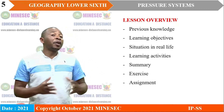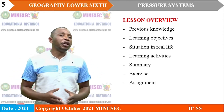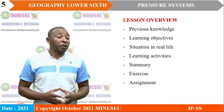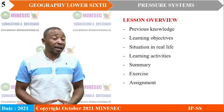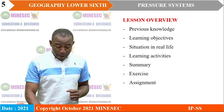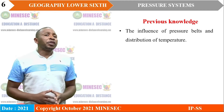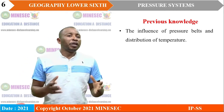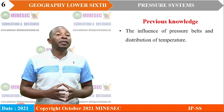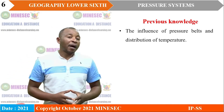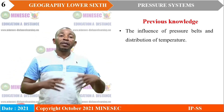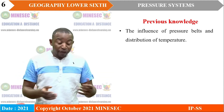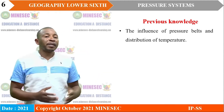The lesson will be comprised of previous knowledge, learning objectives, situation in real life, learning activities, summary of the lesson, then exercises and assignment. Before this lesson, you already have knowledge on the influence of pressure belts on distribution of temperature and precipitation in general, and this previous knowledge is going to help us to better understand the lesson.